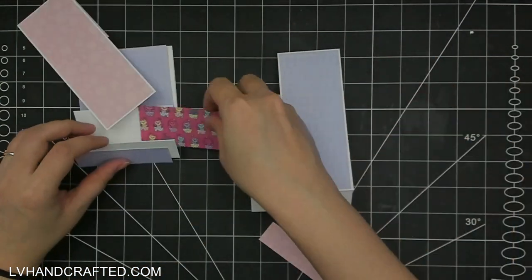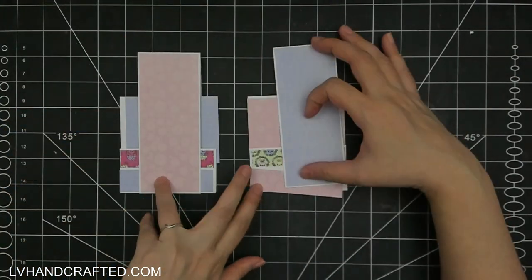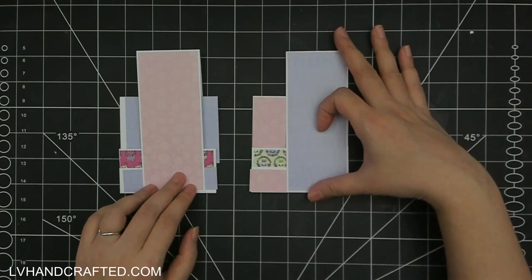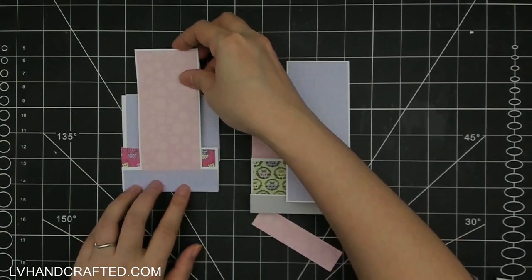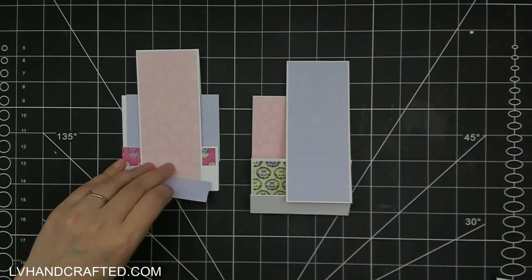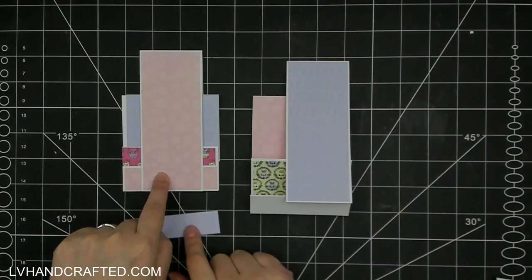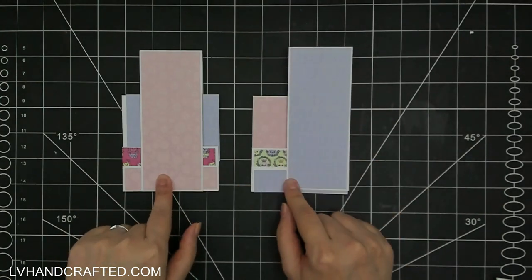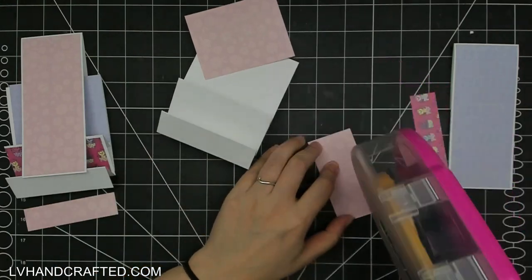And it's great because it's all from one paper pad. So they all are designed to go really well together. And so you can do this of just mixing and matching and flipping to the front from the front to the back because all of the papers are double-sided. So there's lots of different combinations that you can play with.